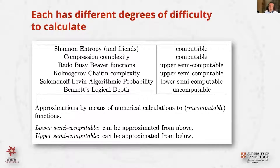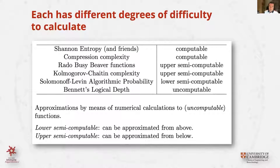One property distinguishing these measures is how easy they are to calculate. Shannon entropy is very easy to calculate once you have or assume the probability distribution. Compression is also relatively easy to compute — both are computable, meaning if you run your algorithm you get an output. By compression I mean popular lossless statistical compression, because algorithmic compression is not entirely computable. Kolmogorov complexity is upper semi-computable, meaning it can be approximated from below, so you can come up with estimations.